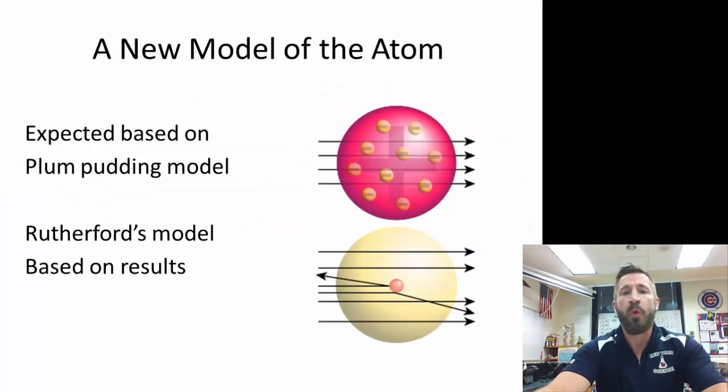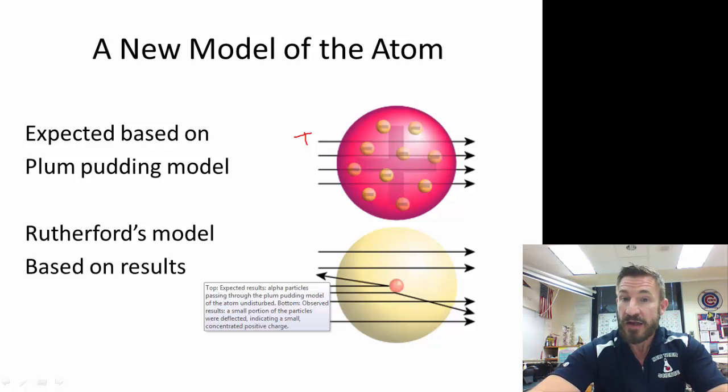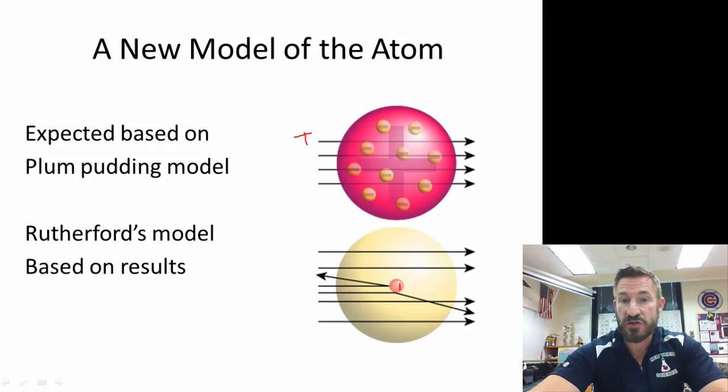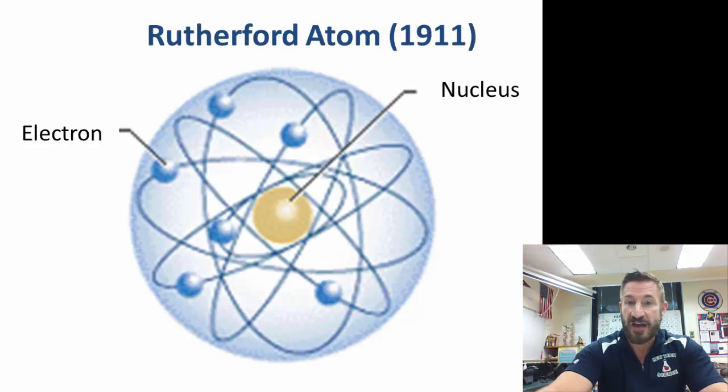What they expected was that most particles would go straight through. Remember, these particles they're shooting through are positive, and the dough around there is positive, so they would expect most particles to go through. Every once in a while some shot back. That was the surprising part - there was an extremely small, extremely dense nucleus which is positive, and that caused them to be deflected. So that's Rutherford's view of an atom. This is the new view: there was a nucleus, extremely small, extremely dense, and the electrons which are negatively charged are in orbit around that nucleus.